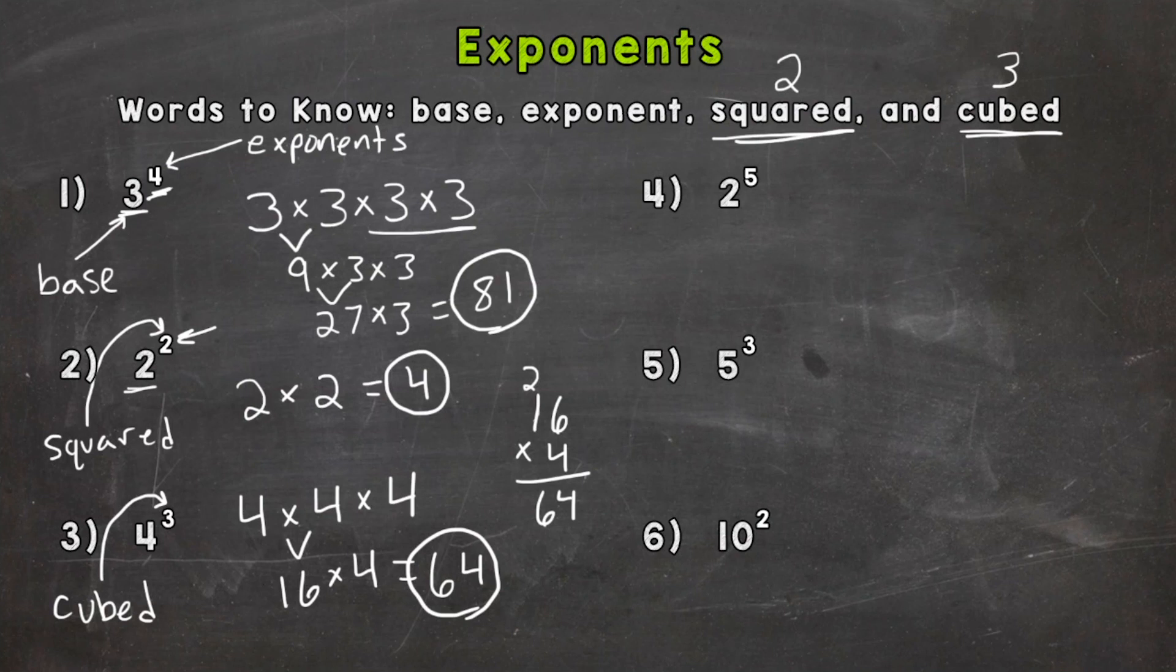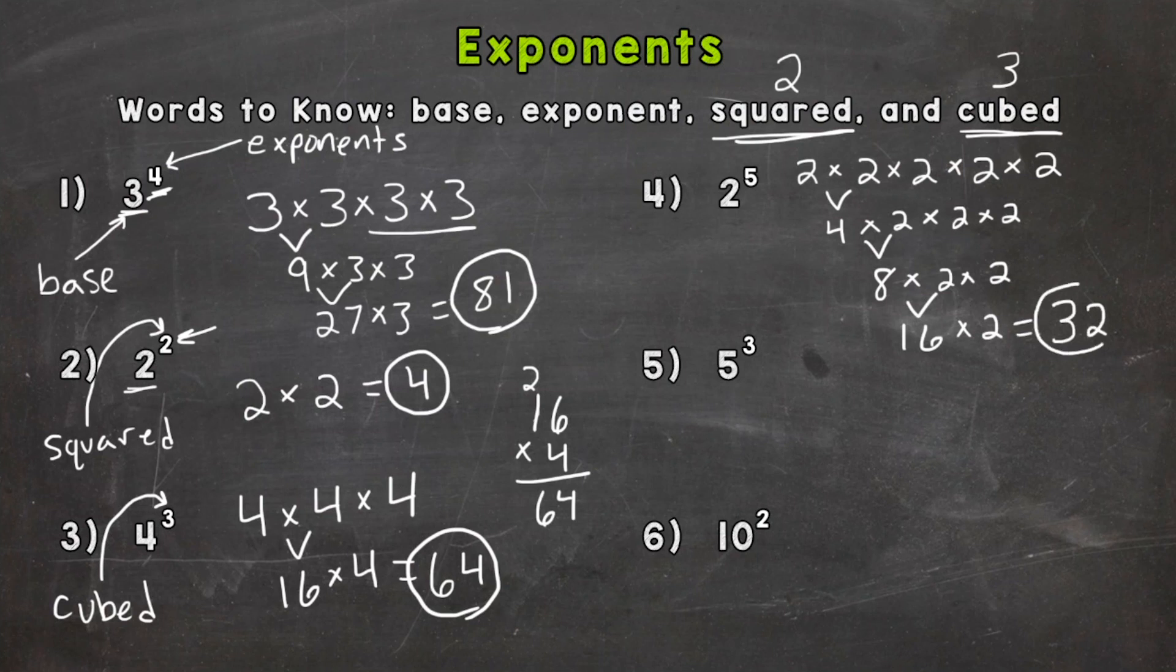So let's go to number four. We have two to the fifth power or two to the power of five. So we need to take two and expand it out five times. Two times two is four. Let's bring down our remaining twos. Four times two is eight. We have two more twos to include. Eight times two is 16. One more two. And 16 times two, we get 32. Two to the fifth power equals 32.